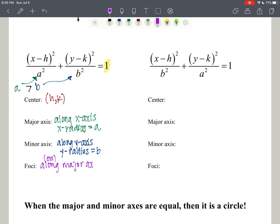They will be a distance c from (h, k), where c is equal to the square root of a² - b².